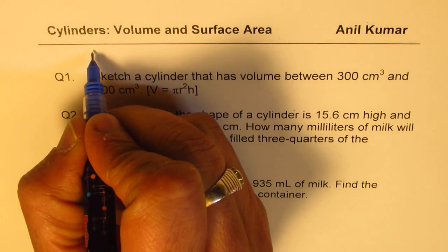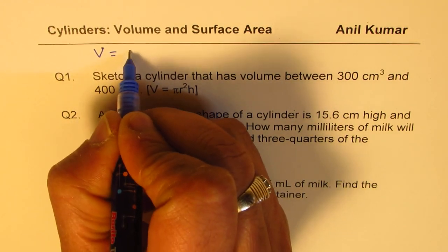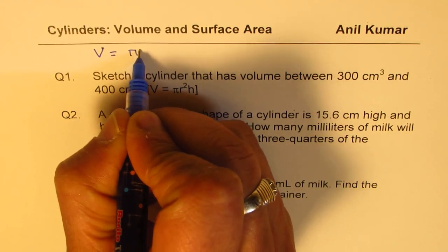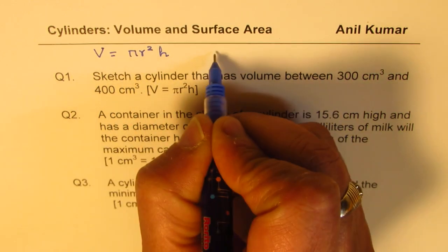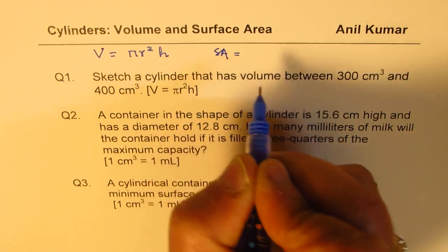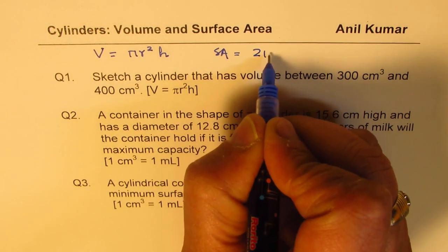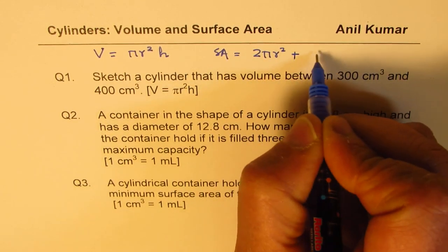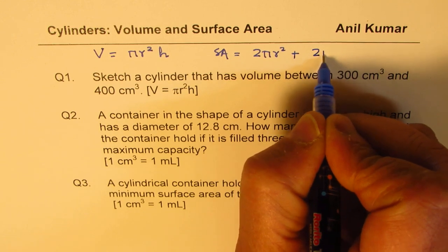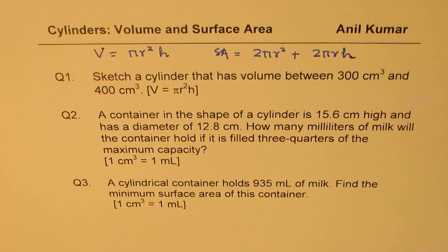Let's begin with the formulas. Volume of a cylinder is area of the base, which is pi r squared, times height. The surface area is given as: there are two circles, so 2 pi r squared, plus the lateral area 2 pi r h. So these are the formulas which you might need.